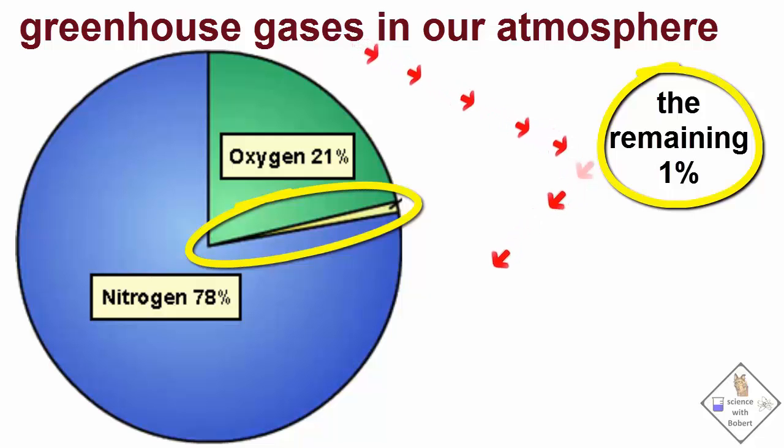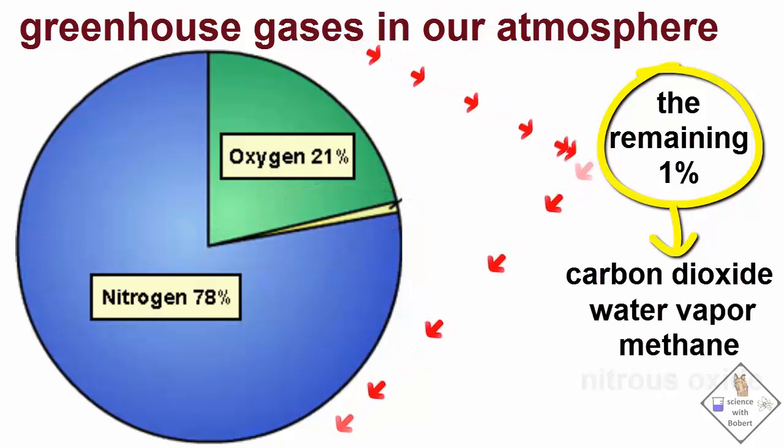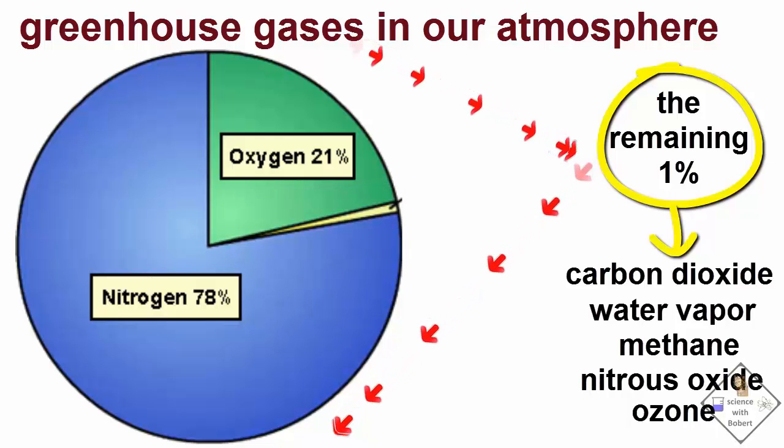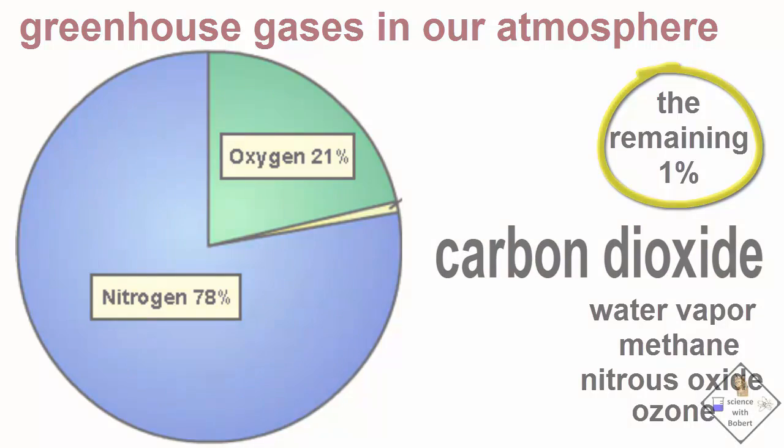Heat blocking gases in our atmosphere are carbon dioxide, water vapor, methane, nitrous oxide, and ozone. Of these heat blocking gases, the EPA reports that it is mostly carbon dioxide.